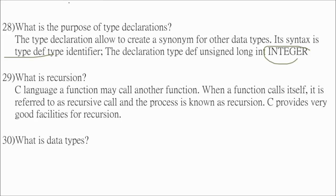What is recursion? In C language, a function may call another function. So when a function calls itself, it is referred to as recursive call. And the process is known as recursion. C provides very good facilities for recursion.